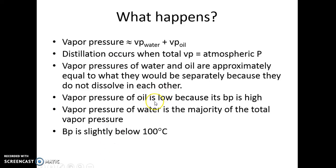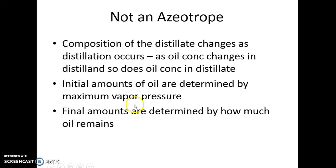Because the oils usually have a high boiling point, the vapor pressure is low at the boiling point of water, and so you don't get that much oil coming over. Steam distillation is not an azeotrope — the composition of the distillate does change as the distillation occurs and as the oil concentration starts to diminish. The amount of oil you get really depends on how much you're able to loosen from the plant material before it is distilled; there's always going to be some left behind.